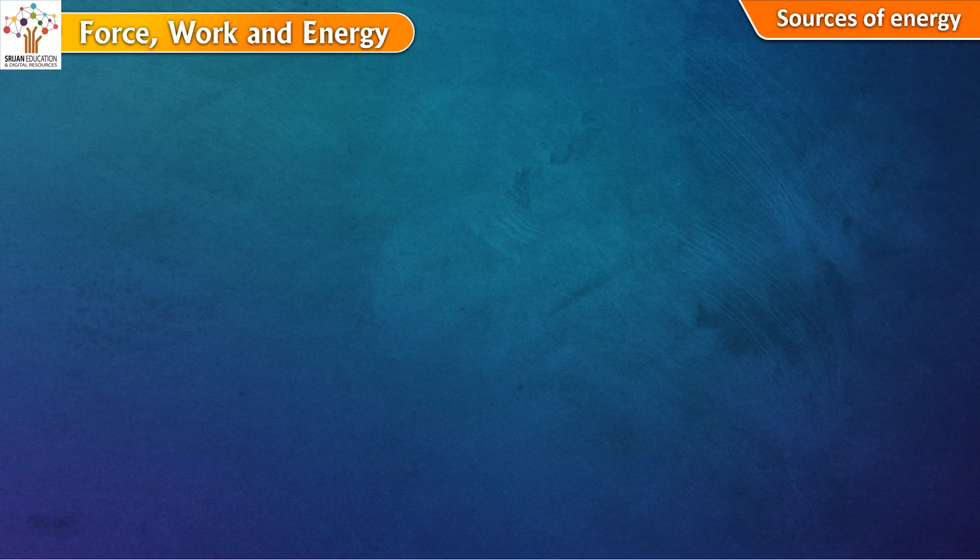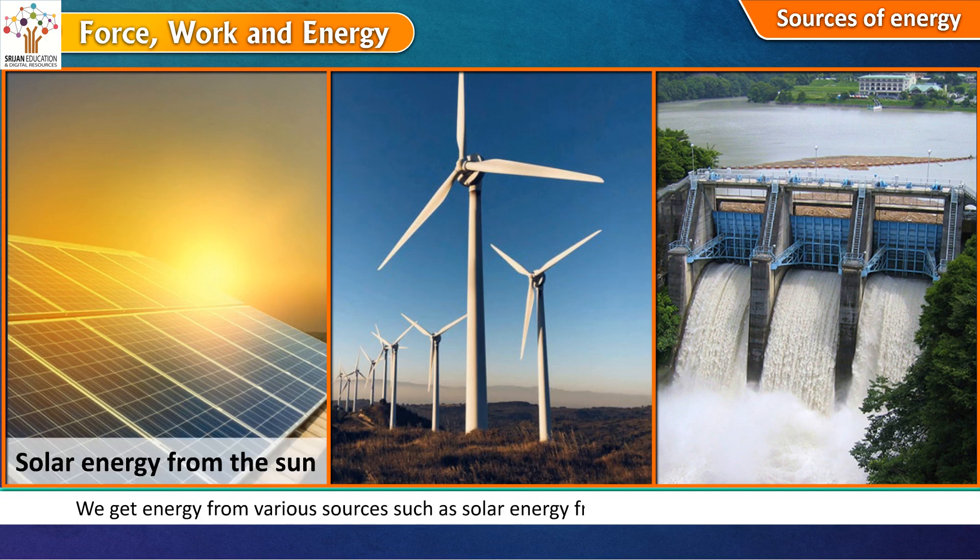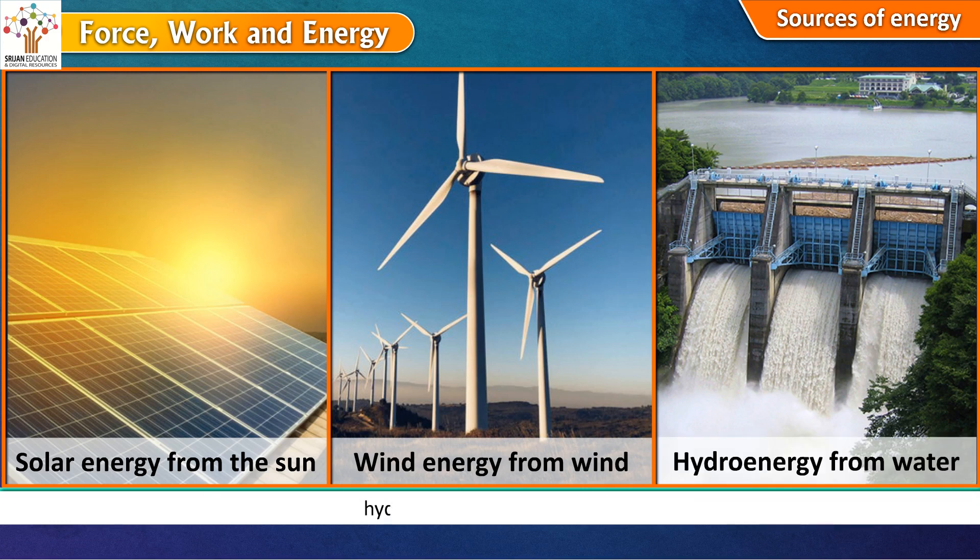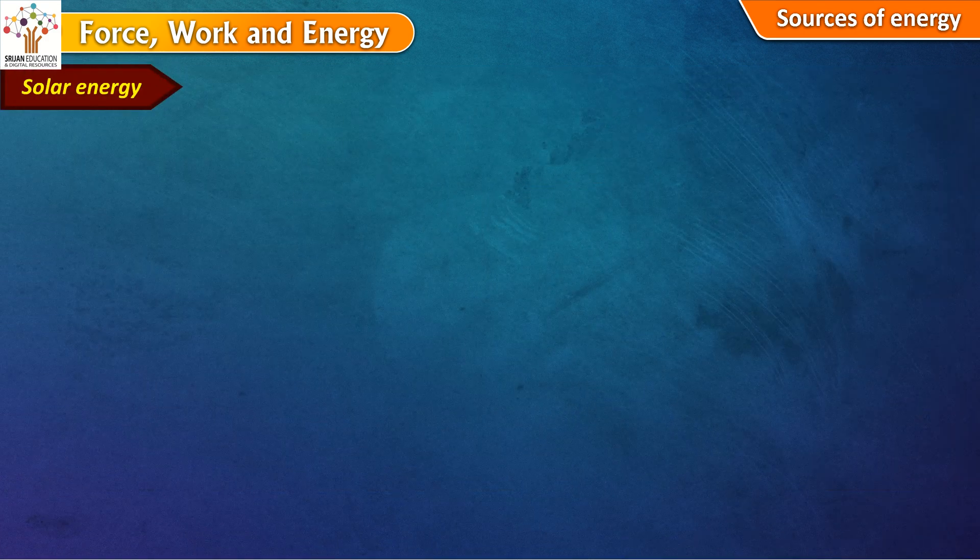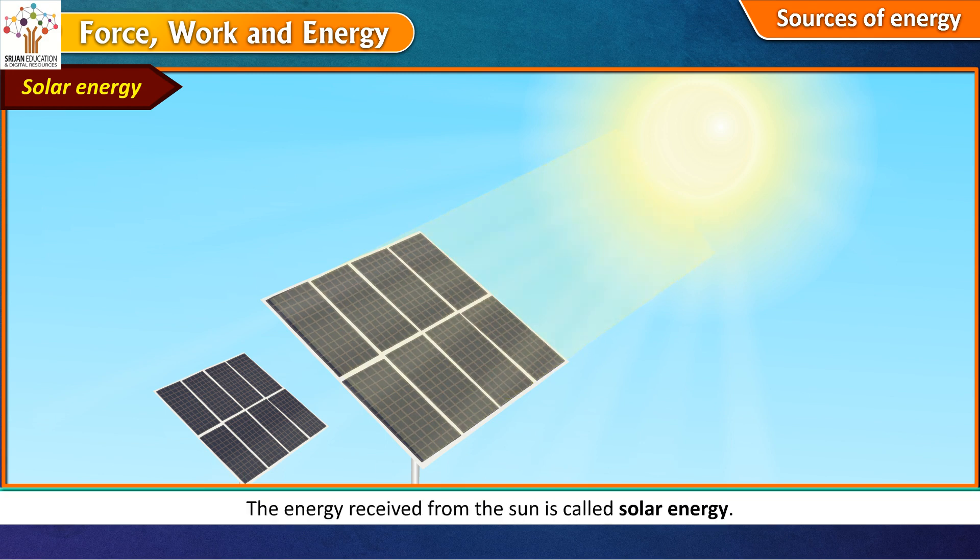Sources of energy. We get energy from various sources such as solar energy from the sun, wind energy from wind, hydro energy from water, etc. Solar energy. The sun is the ultimate source of energy on the earth. It gives us energy in the form of heat and light. The energy received from the sun is called solar energy.